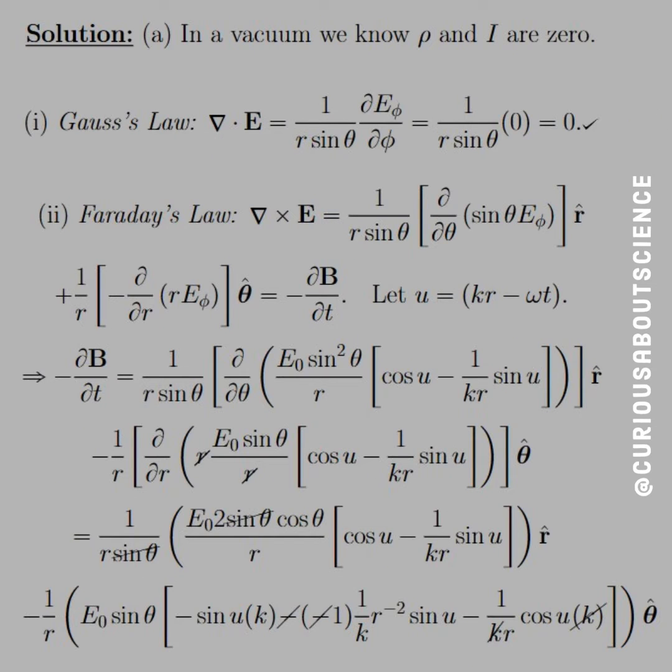Alright, so if we're in a vacuum, we know that ρ and I are zero, so Gauss's law: the divergence of E goes to zero, and when we take the spherical divergence, good to go. Same thing with the curl. We need it for Faraday's law.